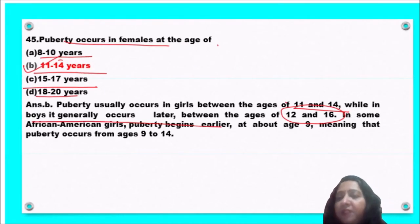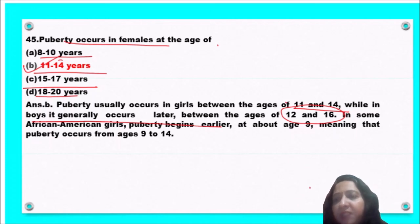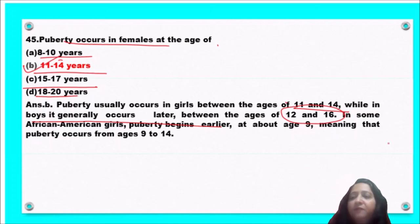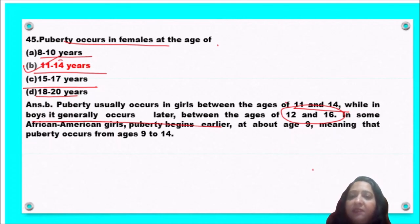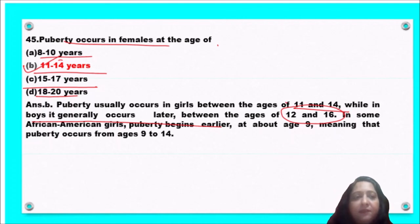Next question: puberty occurs in females at an age of 8–10 years, 11–14 years, 15–17 years, or 18–20 years? Puberty generally occurs in girls at an age of 11 to 14 years. So option B is the correct answer.